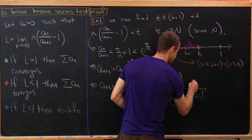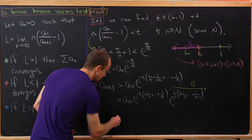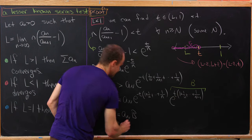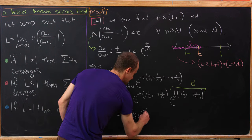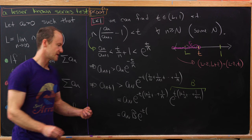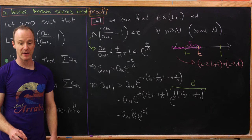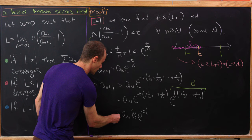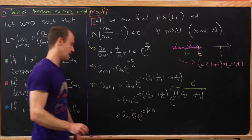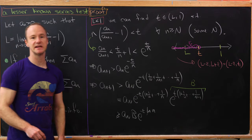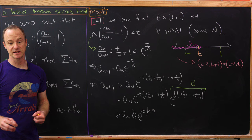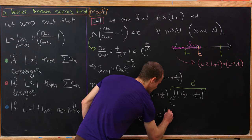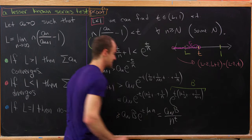Let's call that corrective factor b. We have the nice inequality that all of this is bigger than a_n times b times e to the minus t. The sum one plus one-half up to one over n can be bounded by a logarithm, and the inequality goes in the right direction. So we get a lower bound involving e to the minus t times log n, which simplifies using logarithm rules to a_{capital N} times b over n to the t.